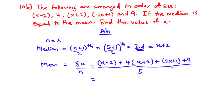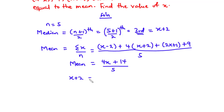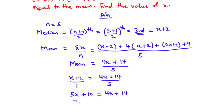Simplifying the numerator: x + x + 2x = 4x, and −2 cancels +2, leaving 4 + 1 + 9 = 14. So the mean is (4x + 14)/5. Since the median equals the mean: x + 2 = (4x + 14)/5. Cross-multiplying: 5x + 10 = 4x + 14. Transposing: 5x − 4x = 14 − 10, giving x = 4. Therefore, the value of x is 4.